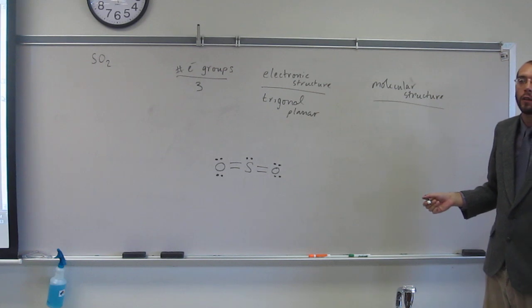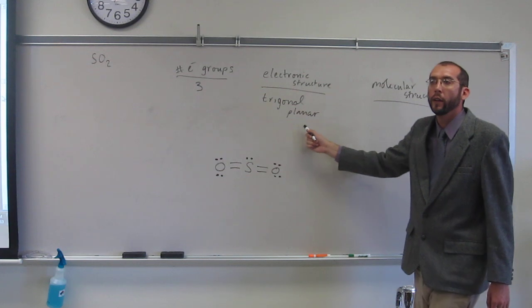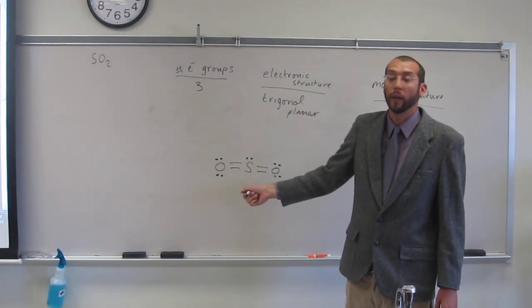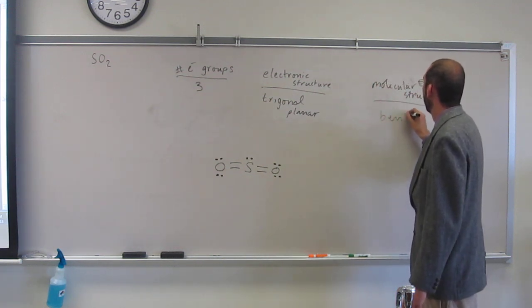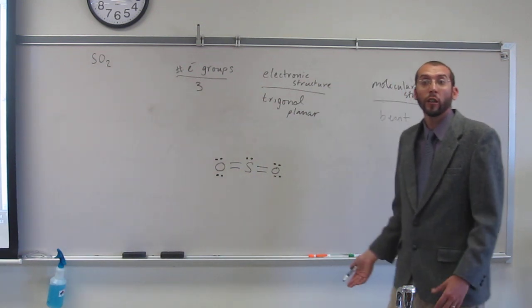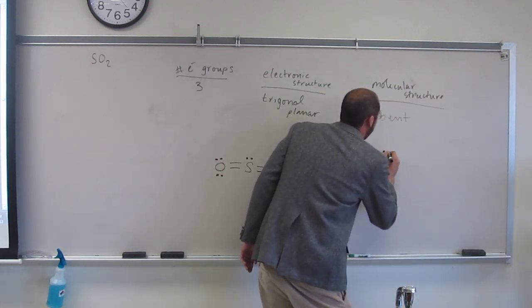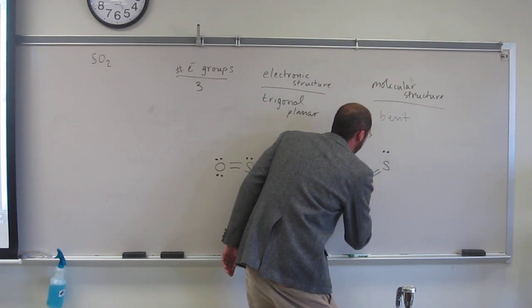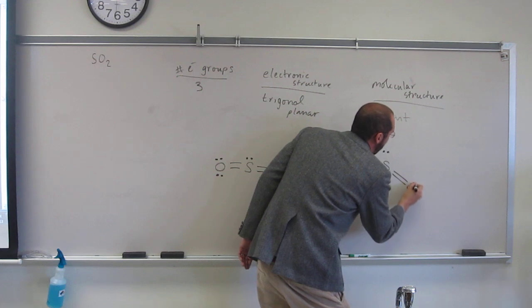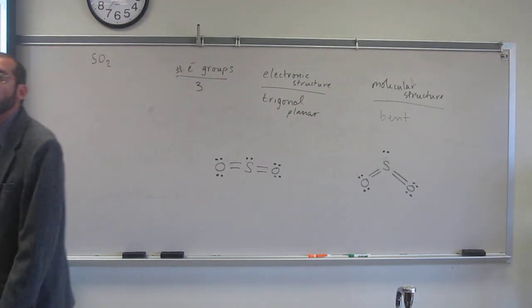What's the molecular structure? It's got to be bent, right? It can't be trigonal planar. Why? Because it would have to have how many atoms around the central sulfur? Three, right? So since it's only got two, it's got to be bent. So, this is not what the molecule looks like, right? It actually looks kind of like something else, right? So it looks like... That's what the molecular structure looks like, the sulfur dioxide.